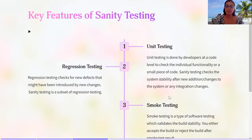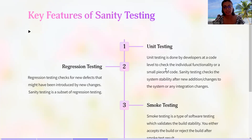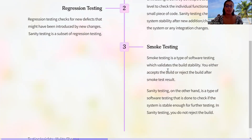How is sanity testing different from unit testing, smoke testing, and regression testing? Unit testing is done by developers at code level to check individual functionality or a small piece of code. Sanity testing checks system stability after new additions, changes, or integration changes happen. Smoke testing validates build stability — you either accept or reject the build based on its results. Sanity testing, on the other hand, checks if the system is stable enough for further rigorous testing, is done after smoke testing, and you do not reject the build in sanity testing.